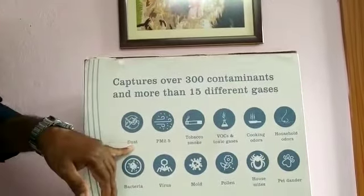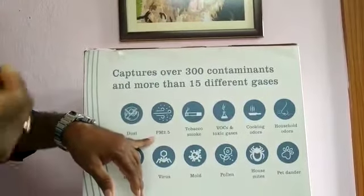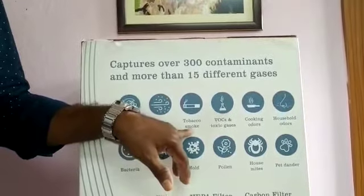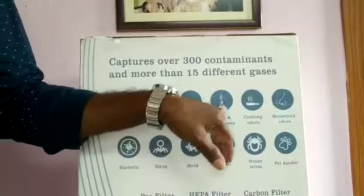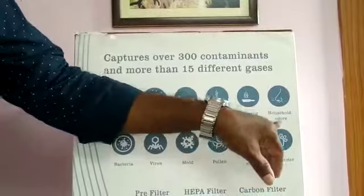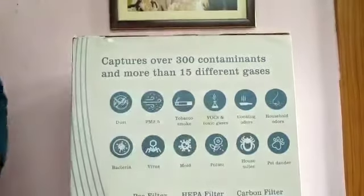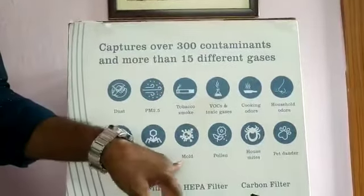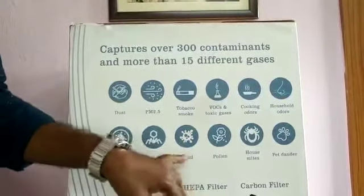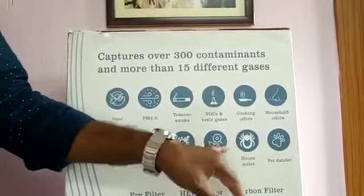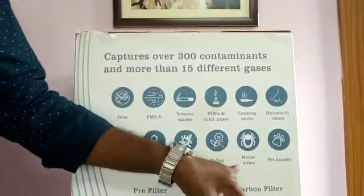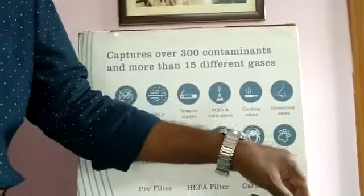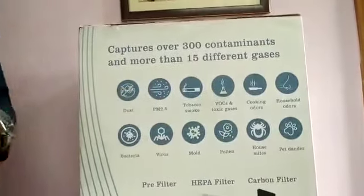For example, we have dust, fine micro particles, cigarette smoke, toxic gases, cooking odors, household odors, bacteria, virus, molds, fungus, pollen, house mites, pet animals and danders — we can filter them all to protect ourselves.